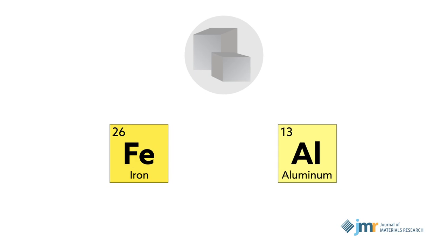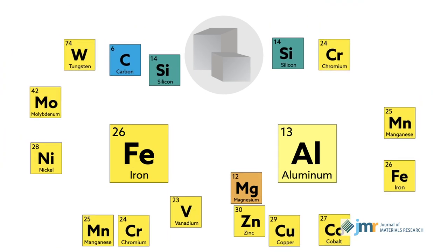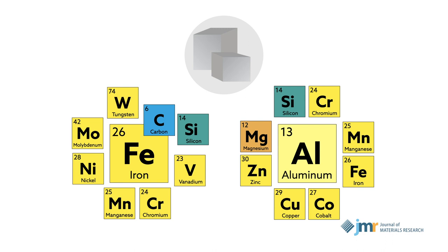Traditional physical metallurgy uses an element with attractive properties as a base and adds small amounts of other elements to improve those and other properties.